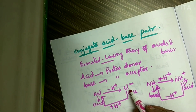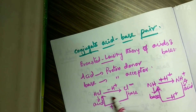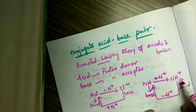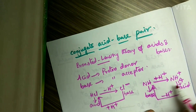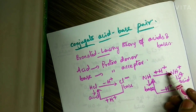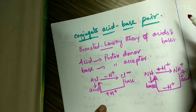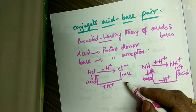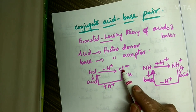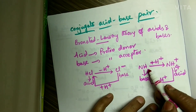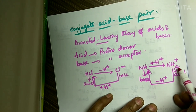HCl and Cl⁻ differ by a single proton, and similarly ammonia and ammonium ion also differ by a single proton. Any pair of species which differ by a single proton is known as a conjugate acid-base pair. Here HCl and Cl⁻ form one conjugate acid-base pair, and NH3 and ammonium ion form another conjugate acid-base pair.